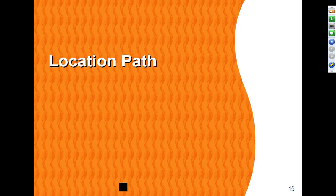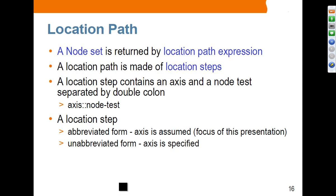A node set is returned by a location path expression, which is what we typically mean when we say XPath expression. A location path is made of location steps. A location step contains an axis and node test separated by a double colon, but in general the axis is omitted. Location steps can be in abbreviated form — which is what we'll focus on — or in unabbreviated form where the axis is specified.